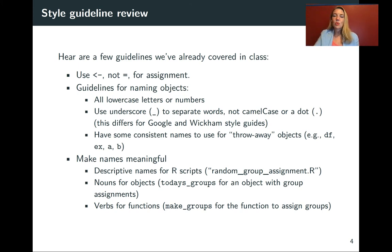So for example if I had a vector that was a list of the people in the class today I could do today's group as the name of that object but then if I wanted to write a function that would assign you into random groups then I might name that function make groups it's got that verb in there.